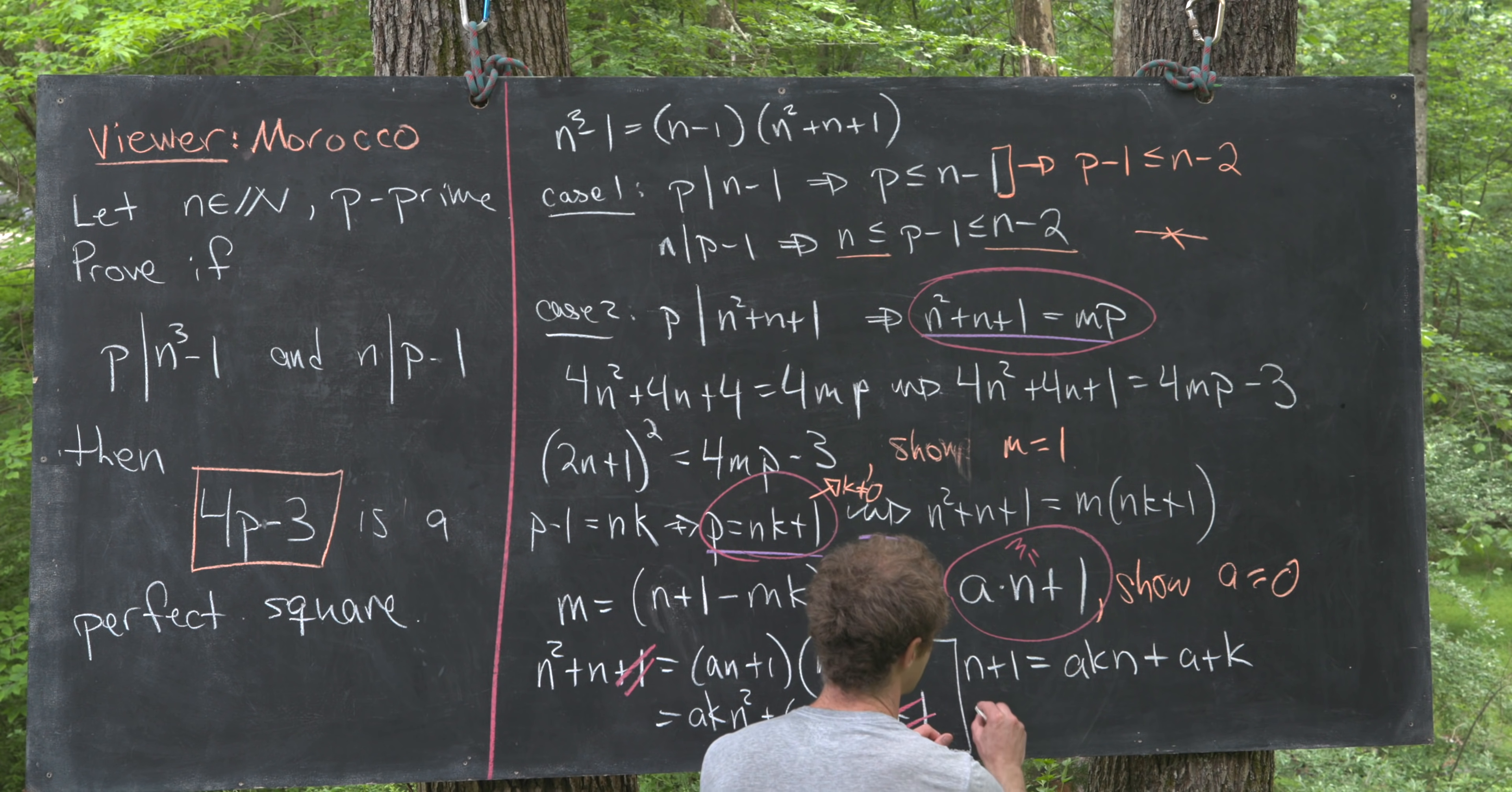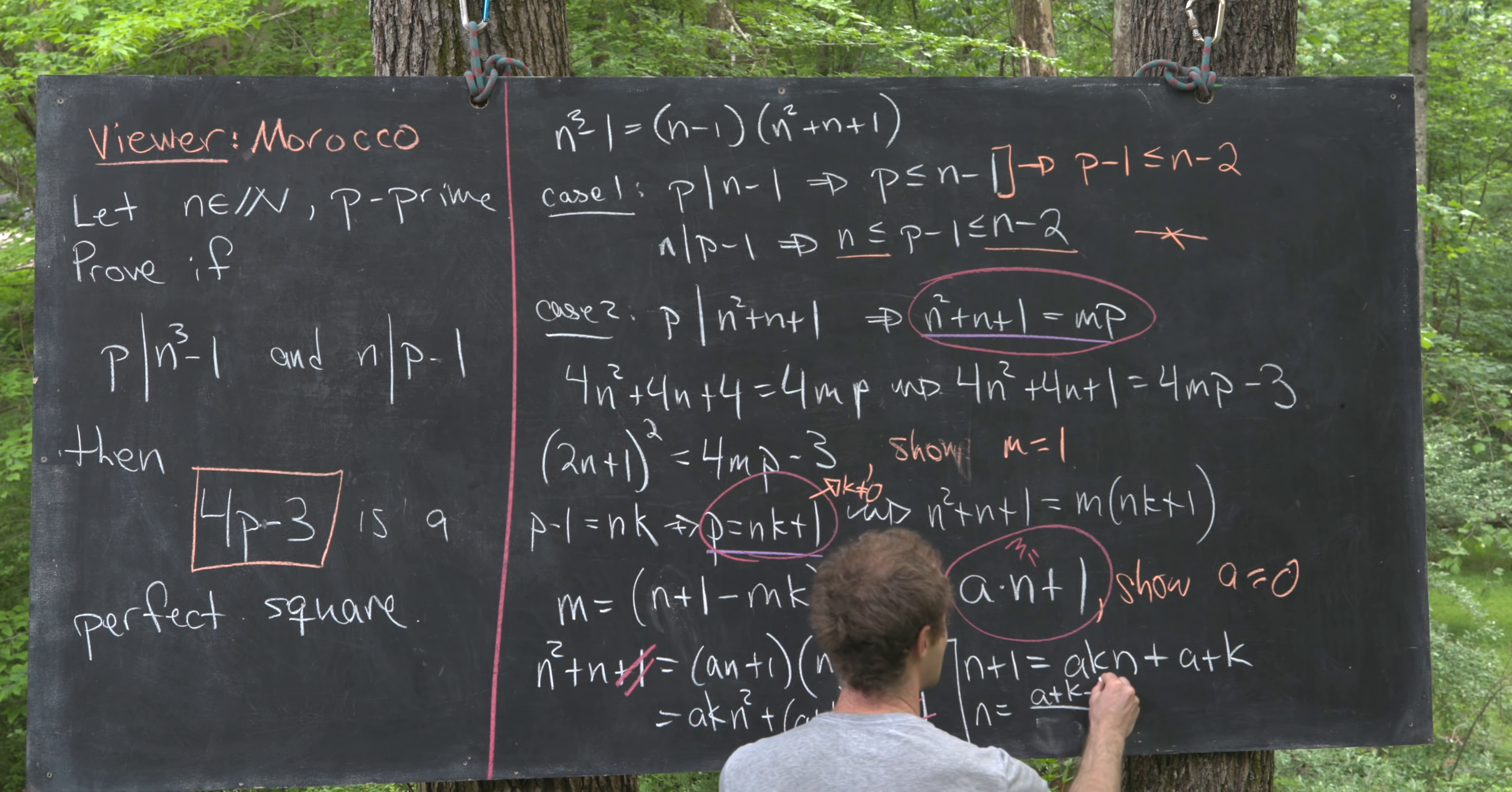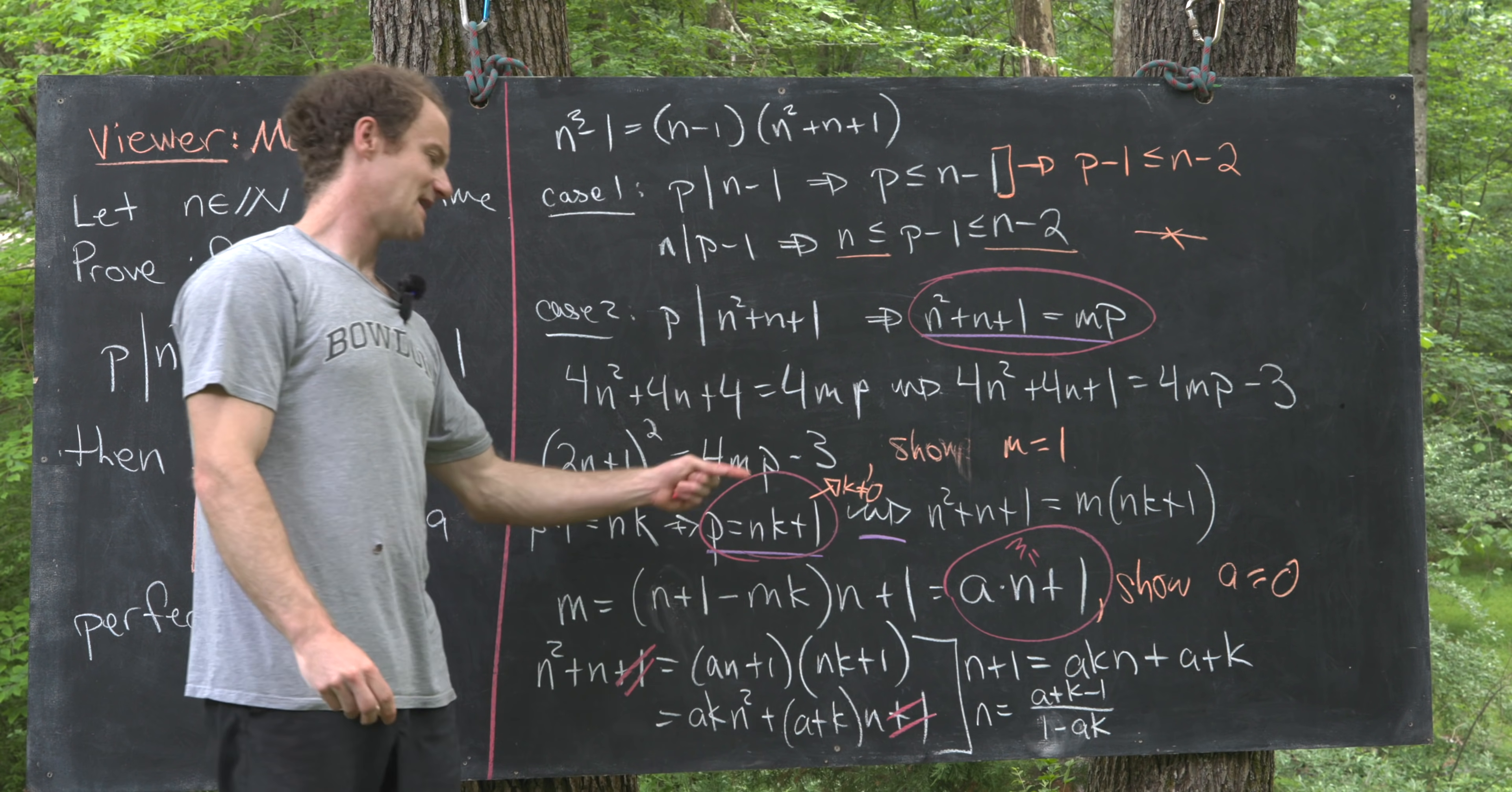So if we solve this for n, we'll get that n is equal to (a+k-1) over (1-ak).